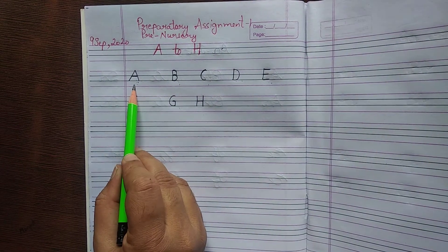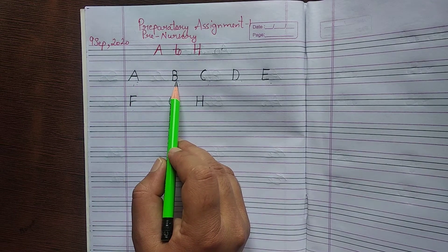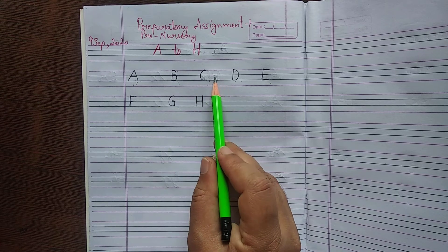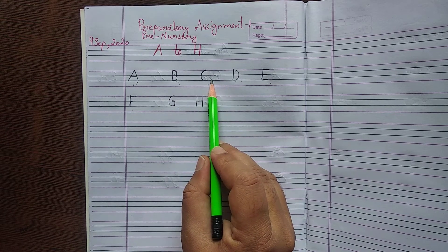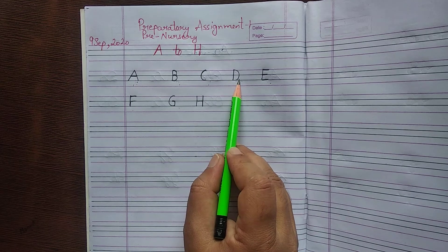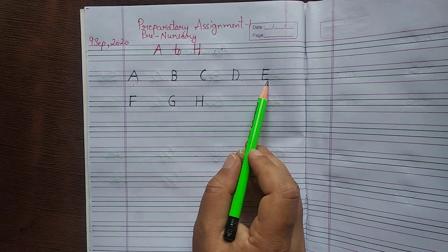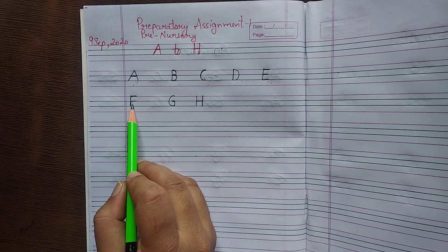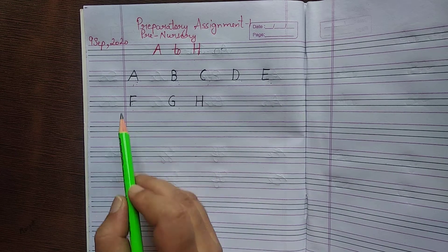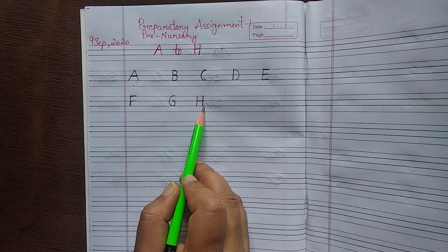A for apple. B for ball. C for cat. D for dog. E for elephant. F for fish. G for grapes. H for horse.